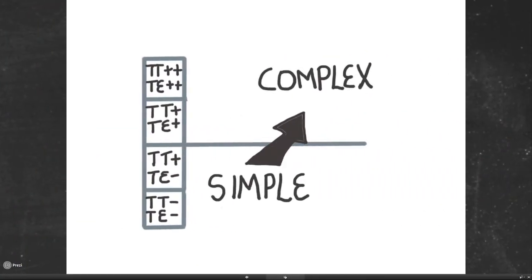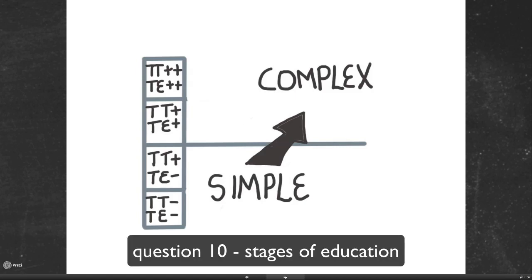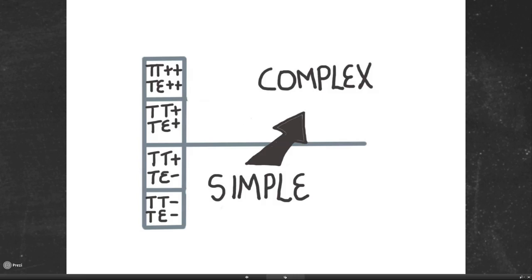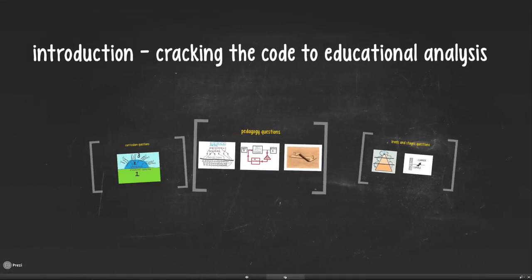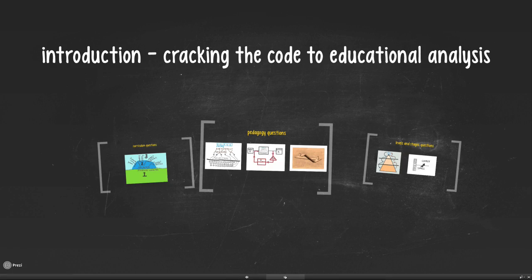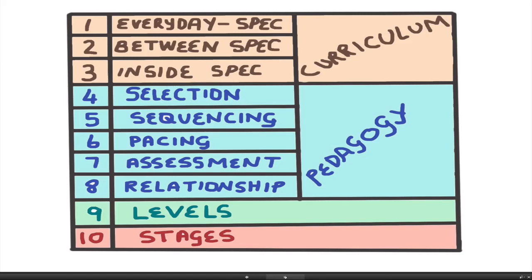Question ten looks at the stages education systems go through. Education systems tend to go from very simple systems — doing one thing at one time in one place — and evolve to become more complex, able to do different things in a flexible way depending on what the situation demands. That shift from simple to complex systems is the focus of question ten. That gives you a quick overview of this course: ten basic questions which give you insight into how education actually functions.